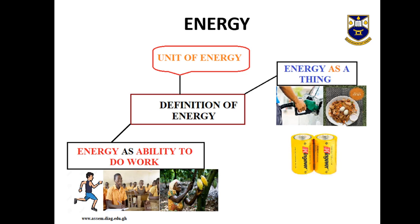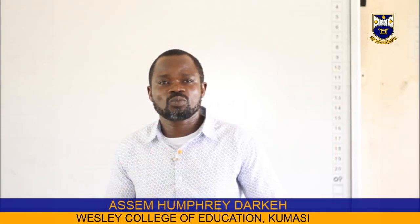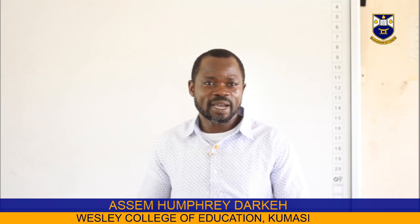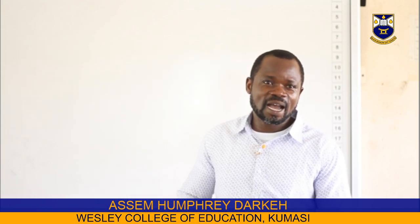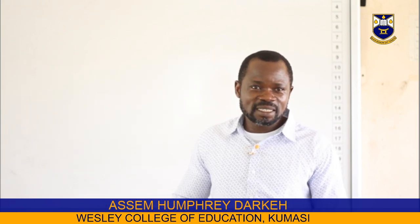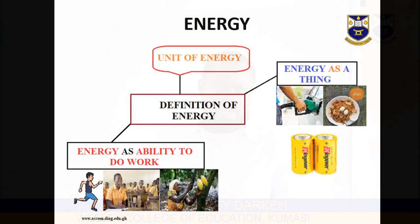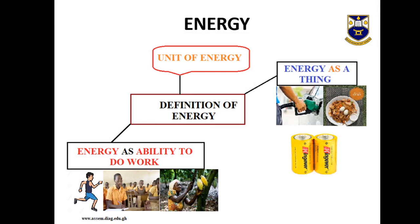Here you are supposed to help your students come to terms with the fact that, for instance, you need a dry cell to make a torch light function. You need food as a human being to be able to work. A car would need fuel — either petrol, diesel, or gas — to make it function.